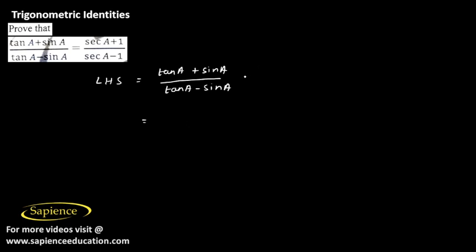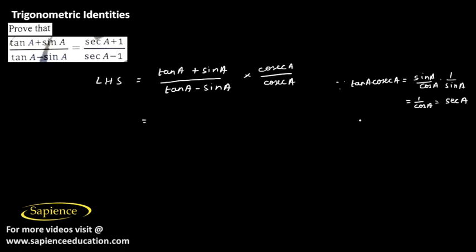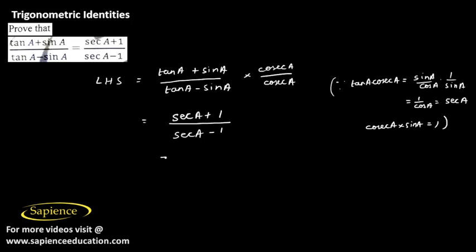If we multiply and divide this by cosecant A, we get: tan A into cosecant A equals (sin A divided by cos A) into (1 divided by sin A), which equals 1 by cos A, which is secant A. Also, cosecant A into sin A equals 1. So the expression becomes (secant A plus 1) divided by (secant A minus 1), which is our right hand side. Hence proved.